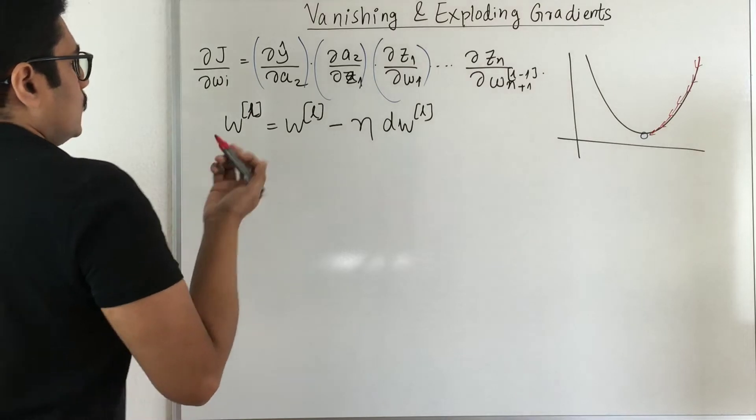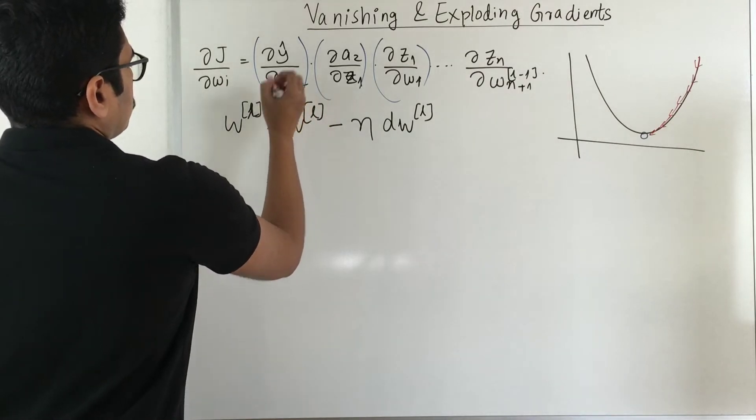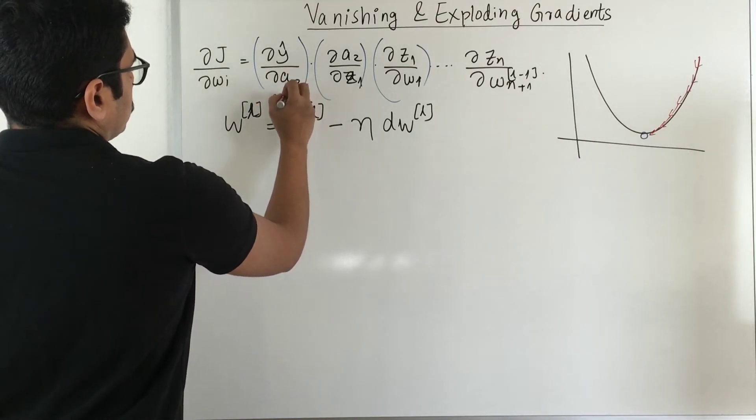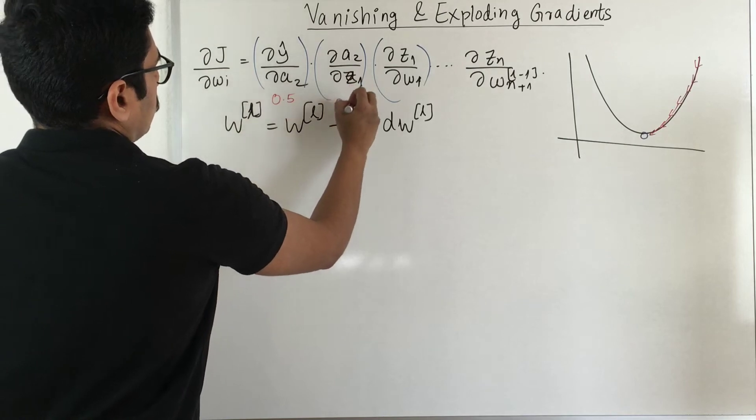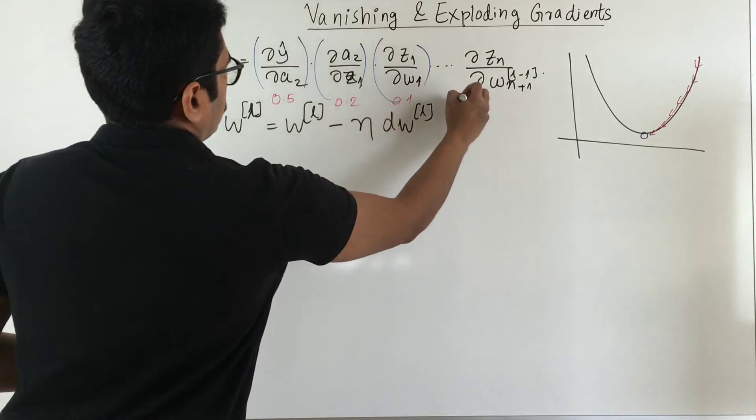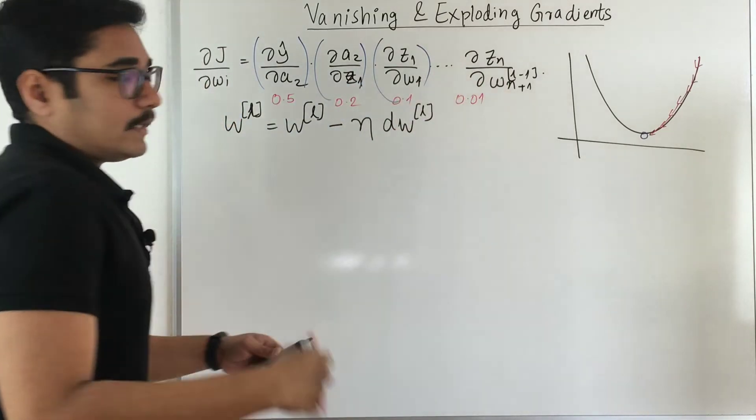Now what happens, say for example if this gradient computation value at this point is 0.5, 0.2, 0.1, 0.001, and so on.